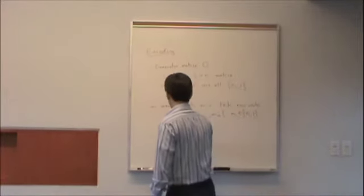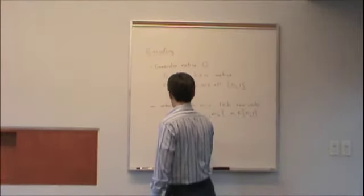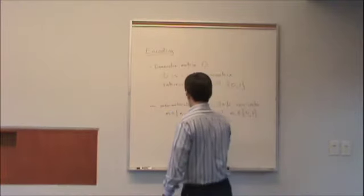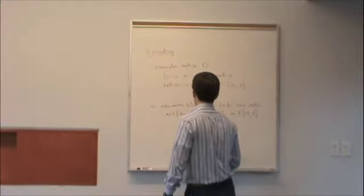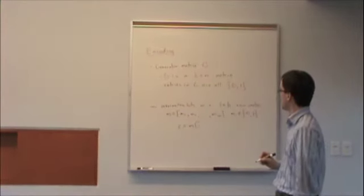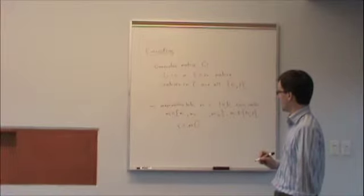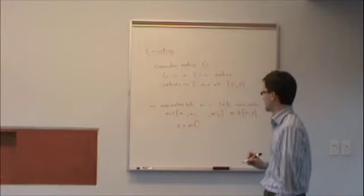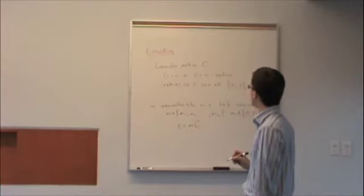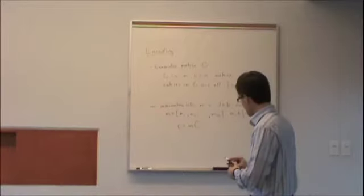And then what I do is I form my code word C by taking M times G, where M is multiplied on the left by G. And everything, just bear in mind, everything here is mod 2.